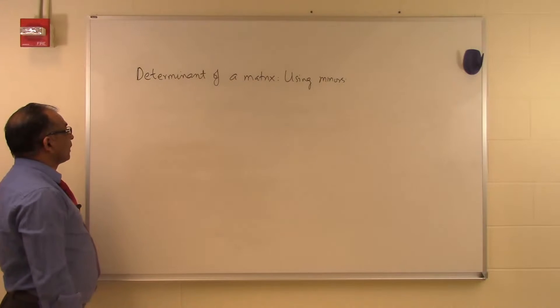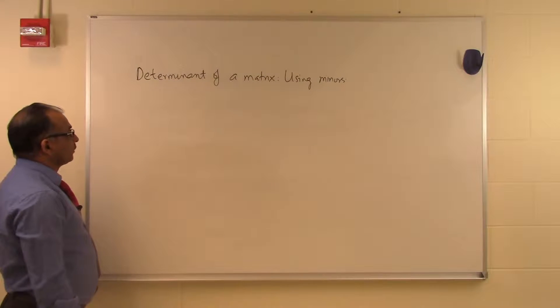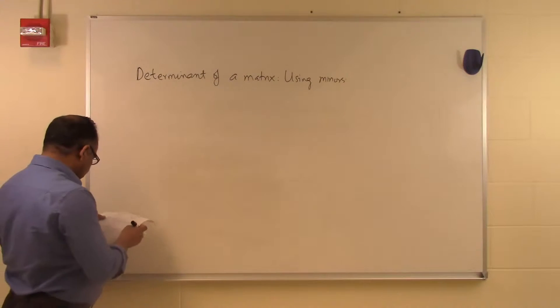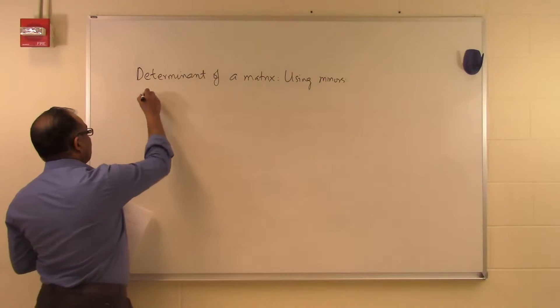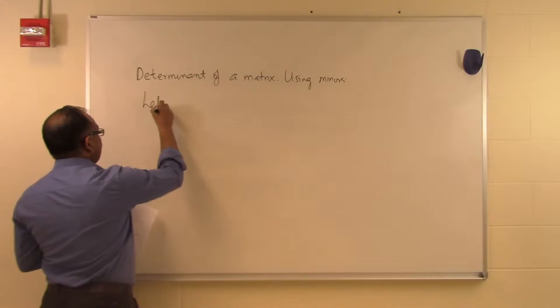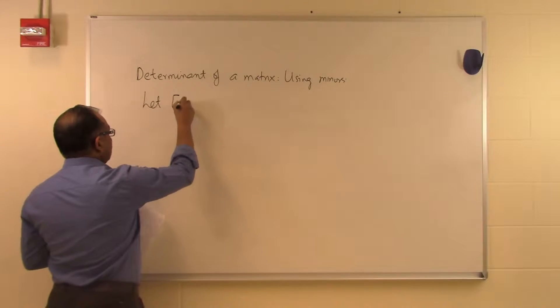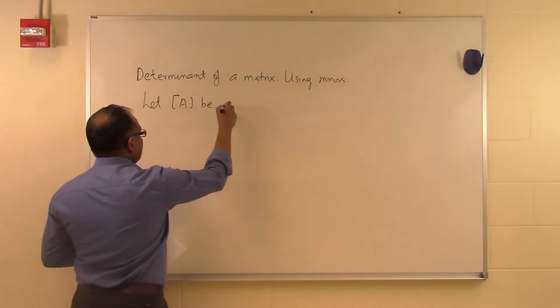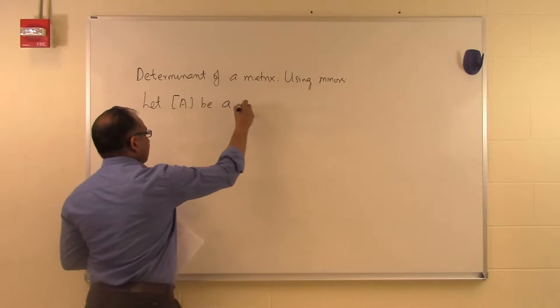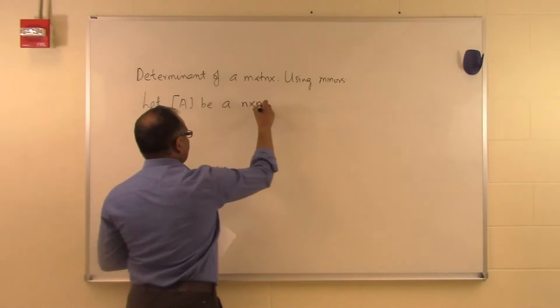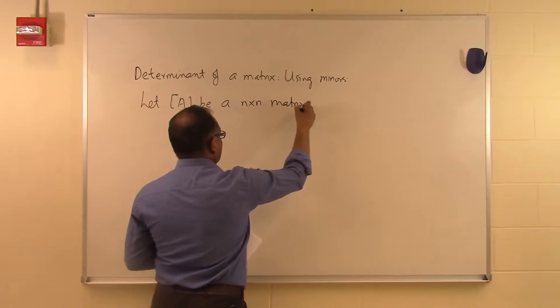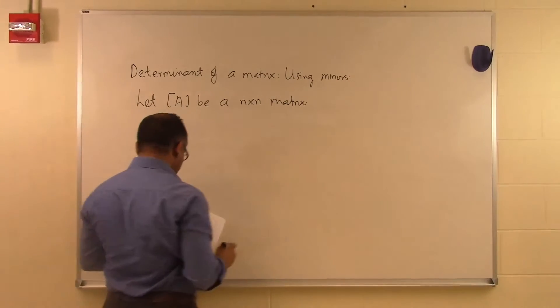In this segment we'll talk about how to find the determinant of a matrix using minors. The determinant can only be found for a square matrix, so let A be an n by n matrix.